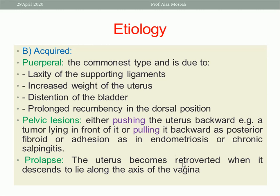What about pelvic lesions? Any pelvic lesion which may push the uterus backwards — like an ovarian mass anterior to the uterus pushing it posteriorly — or something pulling the uterus backward due to adhesions, as in endometriosis, pelvic inflammatory disease, or posterior wall myoma pulling the uterus posteriorly. What about prolapse? In prolapse, the uterus becomes retroverted when it descends to lie along the axis of the vagina, and it must be in an RVF position to allow descent of the genital organs.